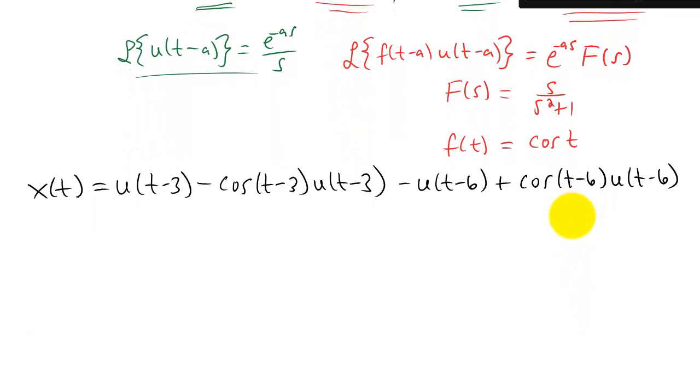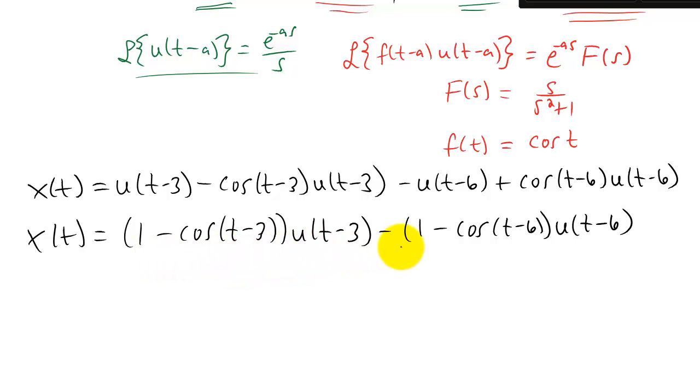So in short maybe a little nicer way to write this solution would be this right here. Writing it in this form I think demonstrates a little bit more clearly that we really just have two jumps as we say in our answer.